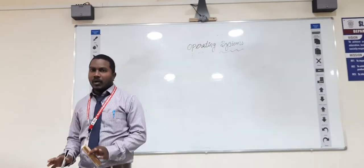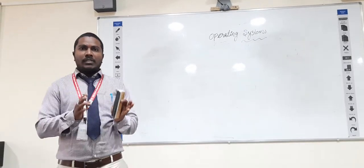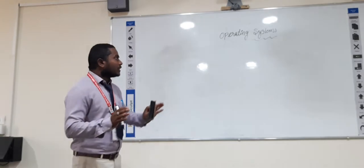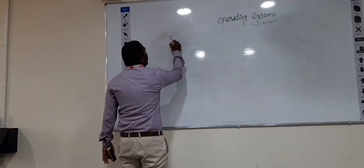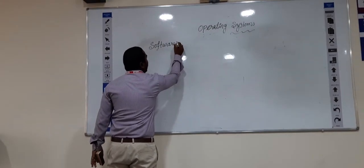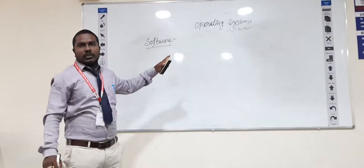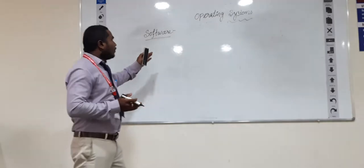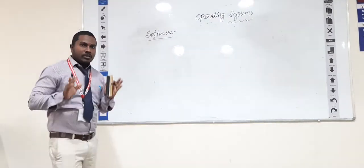So, operating system means what? An operating system is a software which acts as an interface between the user and computer. First of all, let me explain what is software. Software is nothing but a set of programs — specifically, a set of programs with documentation — and that is called software.